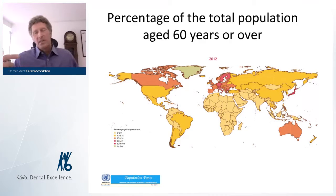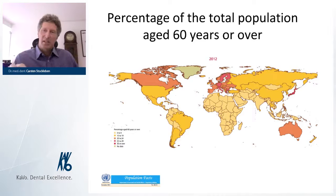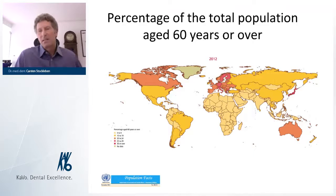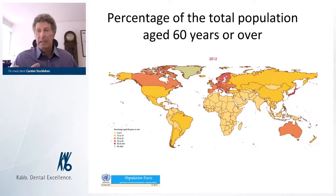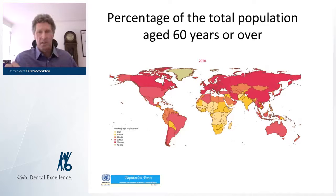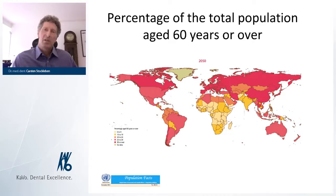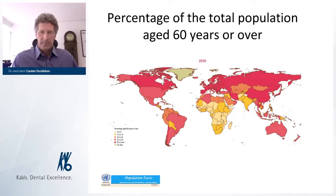Understanding the problem with periodontal disease requires looking at demographic change. A chart from 2012 shows countries where the age group of 60 years or older counts for 30% or more — Japan, Scandinavia, Germany, Italy, Greece. But looking at a 2050 projection, we see red nearly everywhere. The only place with a majority of young people will be Africa. All Western countries will face a demographic problem, more or less severe.